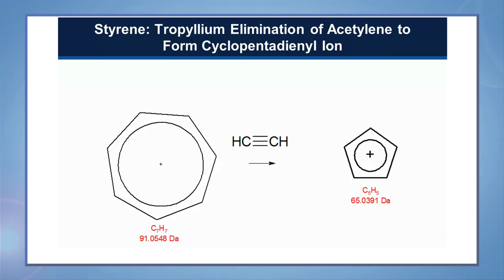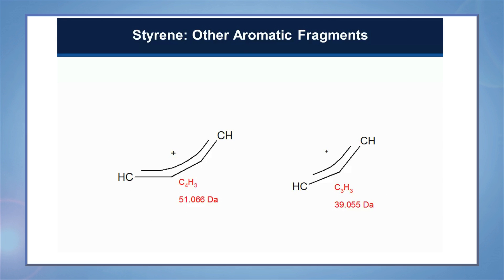Another possibility is the formation of the cyclopentadienyl ion indicated by m/z 65. This occurs due to the elimination of neutral acetylene from the tropilium ion. We should also check for the presence of other known aromatic fragmentation ions — for example, m/z 51 and m/z 39. So for our styrene component, we'll initially check for m/z 105, 91, 78, 77, 65, 51, and 39.